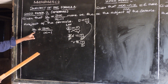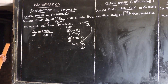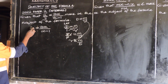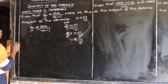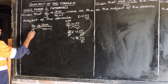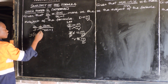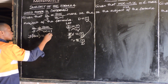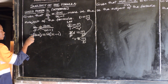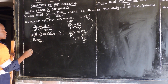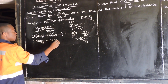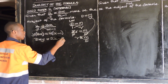So in this case, 2 over y is the current subject of the formula, but they want us to make x the subject. So what we're going to do is cross multiply. We multiply 2 by x minus 1, and multiply y by 3x. So y times 3x gives us 3xy. It is equal to 2 times x which gives 2x, then 2 times negative 1 gives negative 2.